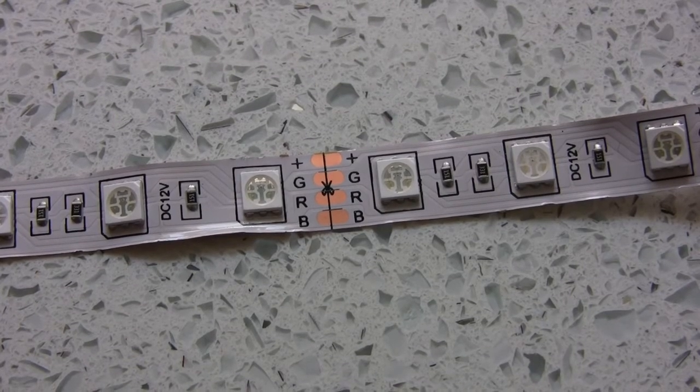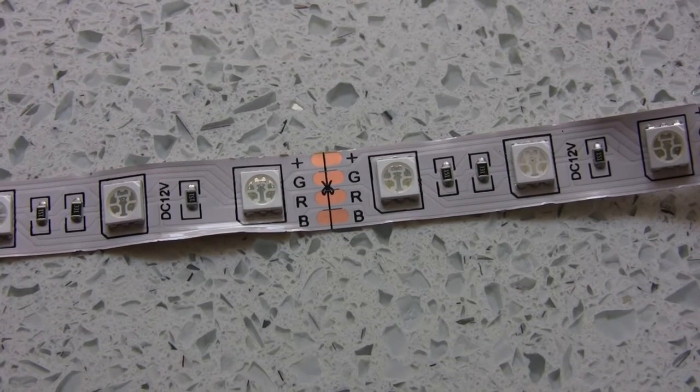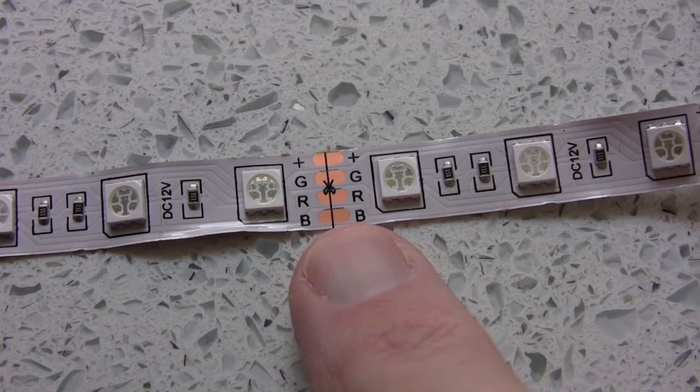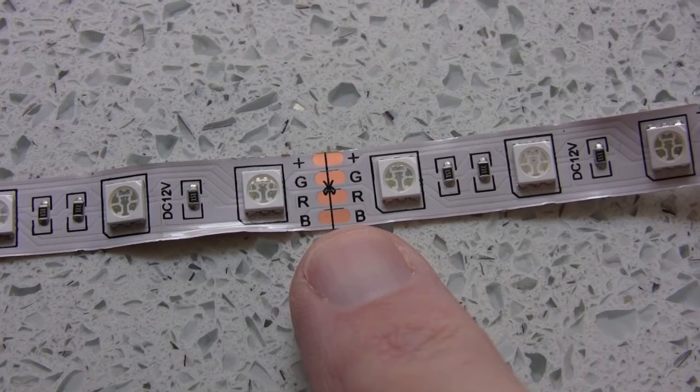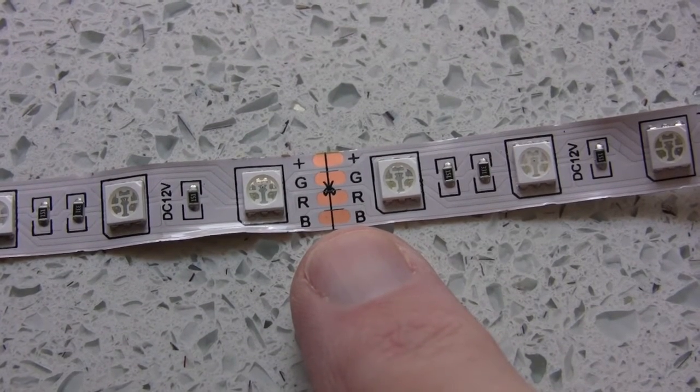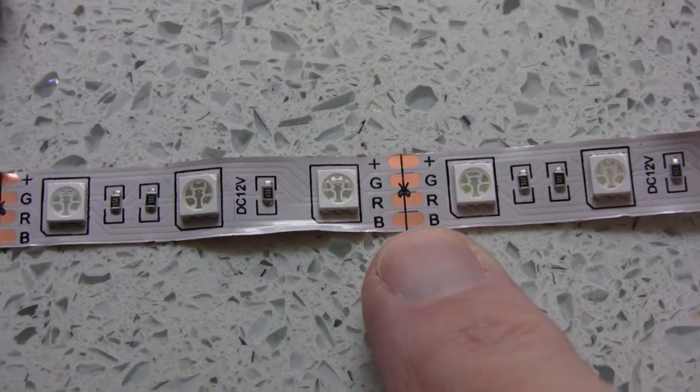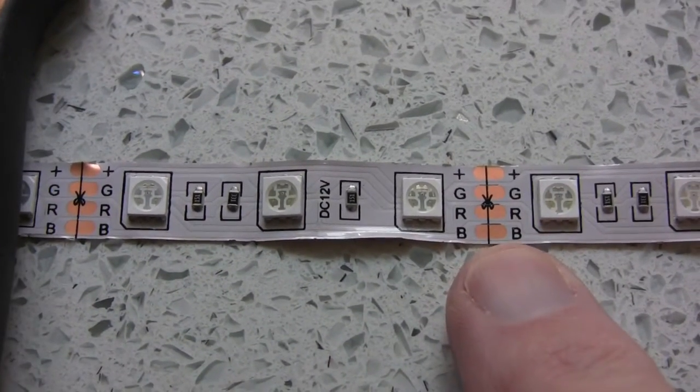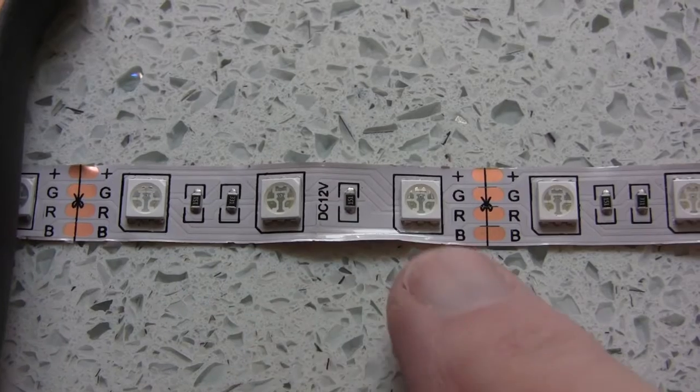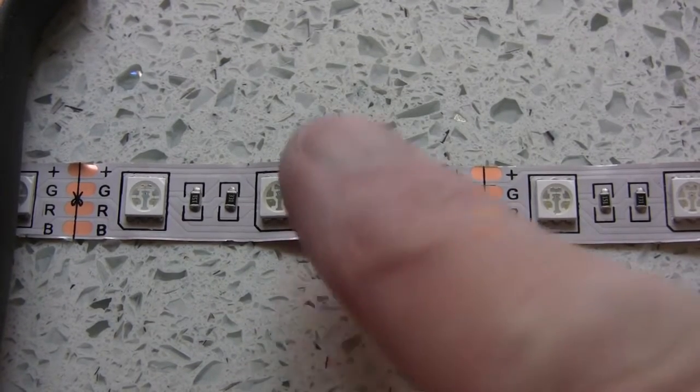As these LEDs are designed to work from 12 volts, they tend to be in series-parallel combinations. This is where you can cut—you can cut after three diodes. You can clearly see two cut marks. If you cut in between, you mess up the whole thing.